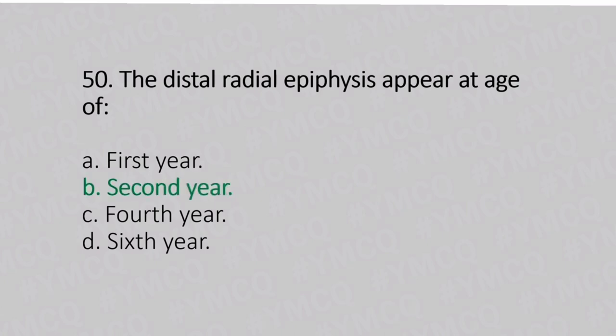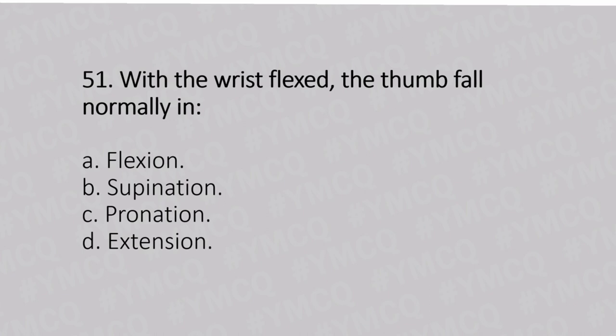Now let's move to question number 51. With the wrist flexed, the thumb falls normally in. Option A: flexion. Option B: supination. Option C: pronation. Option D: extension. And the answer is Option D, extension.